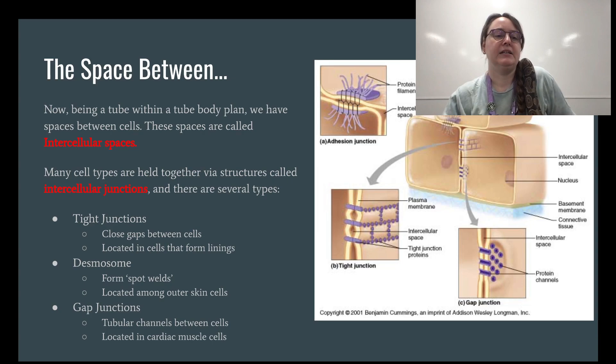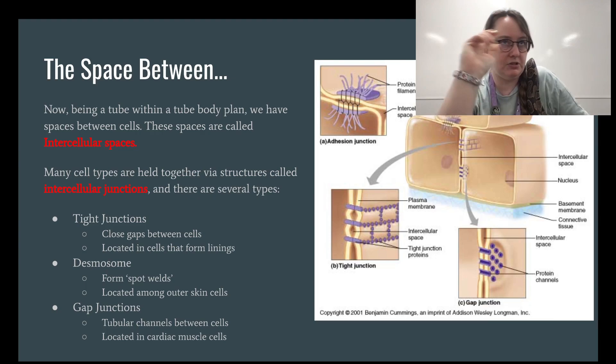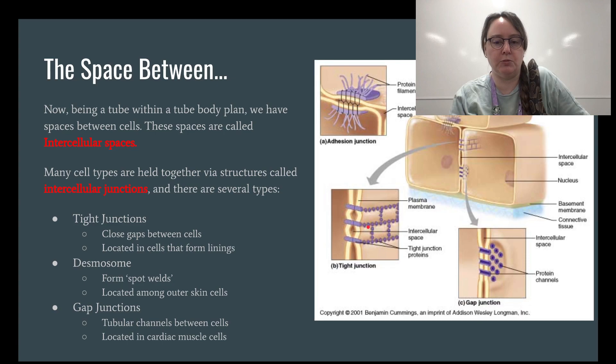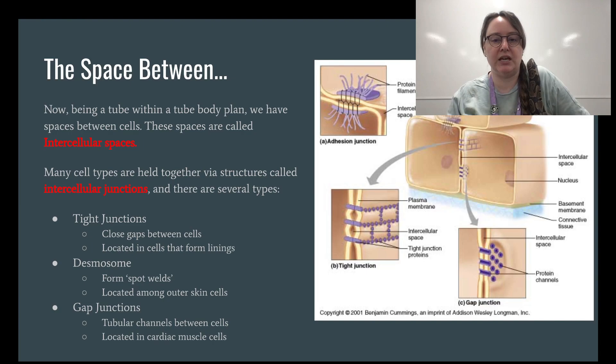Tight junctions close the gaps between cells and are located in cells that usually form linings — any epithelial tissues lining your organs or the inside of your body cavity where all your organs are hanging out. They kind of look like rivets, which is why they're called tight junctions — they're riveted together with tight junction proteins going through the cell membranes and holding everything together. I liken these to rivets used in construction.